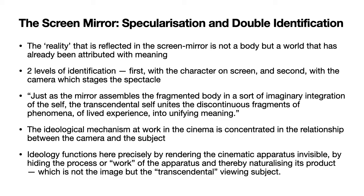Baudry says there are two levels of identification. First, it is with the character on screen — when we watch a movie, we might identify with the hero or heroine. But secondly and more importantly, there is an identification with the camera which stages the spectacle. This is where the whole idea of gaze comes from, because the gaze of the camera is continuous with the gaze of the spectator. The spectator cannot see anything other than what the camera allows them to see. If the camera shows you a naked woman, then you are actually seeing that — your gaze becomes continuous with the gaze of the camera. This is what later Mulvey and others take to talk about the male gaze, the patriarchal nature of the gaze.